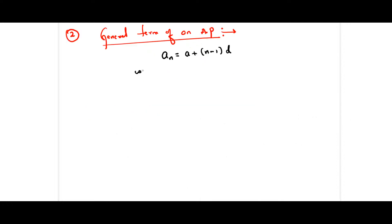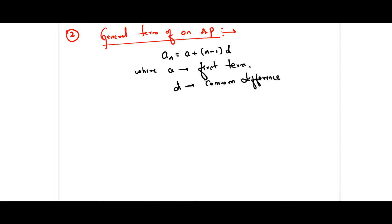In AP: A is the first term, D is the common difference, and N is the number of terms.